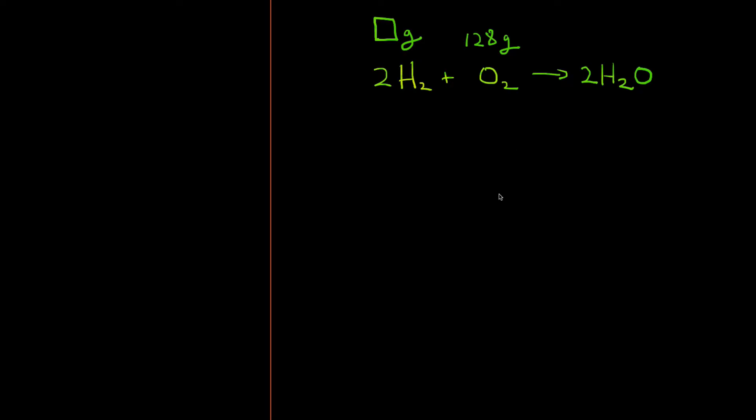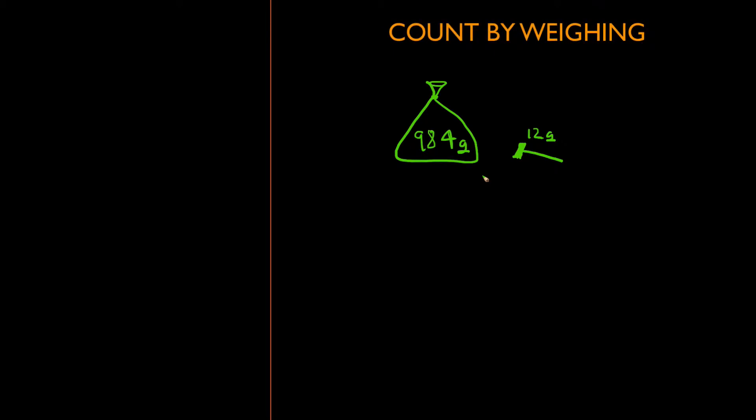Now let's return to our equation. First topic: count by weighing. Let me illustrate this for you. Let's say we have a bag of nails that weighs 984 grams and we need to know how many nails are in that bag, but we're not allowed to look inside the bag. We are given one additional piece of information: all the nails are the same and each nail weighs 12 grams. Knowing how much each nail weighs allows us to easily work the equation using dimensional analysis.